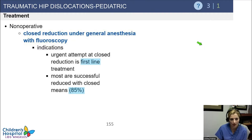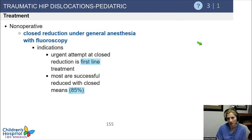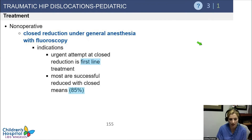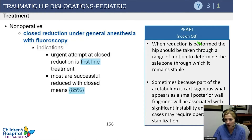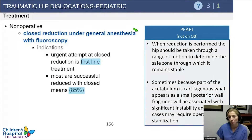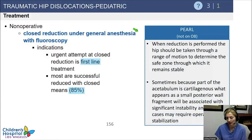In terms of treatment, the first step is generally closed reduction under heavy sedation or general anesthesia. There's some debate about whether fluoroscopy is needed in all cases, but we don't want to delay getting the hip in. Most of the time this can be successfully reduced with closed means. A pearl: after you reduce it, document the safe zone of stability. If you have a really small safe zone before the hip slips out again, that patient probably has a significant acetabular injury or soft tissue in the joint causing instability.